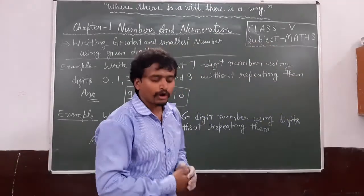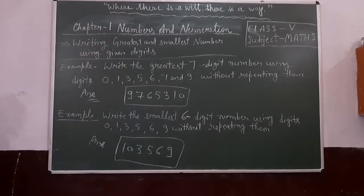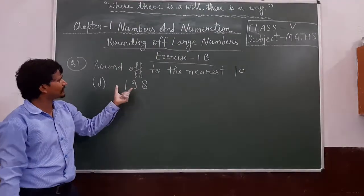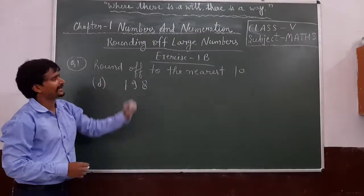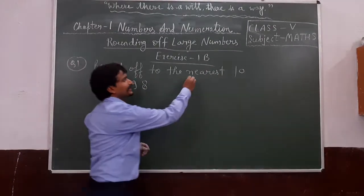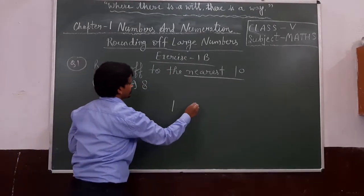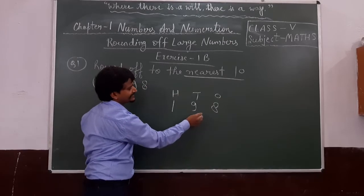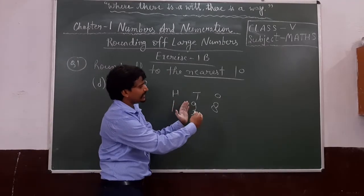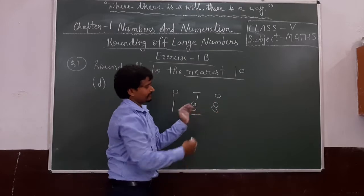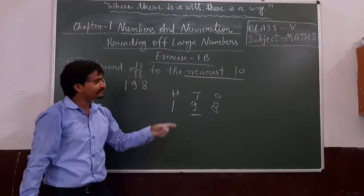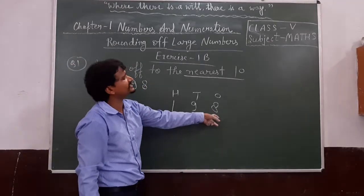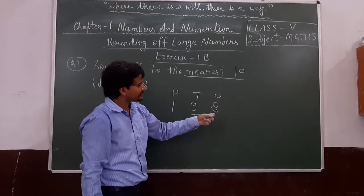Now we will move to the next topic: rounding of large numbers. Exercise 1b, Question 1: Round off to the nearest 10. We have to round 198. Nearest 10 means we look at the tens place. In 198 — ones is 8, tens is 9, hundreds is 1. Underline the tens digit 9. Now observe the digit just to the right of the underlined digit. That digit is 8. Compare 8 with 5 — 8 is greater than 5.